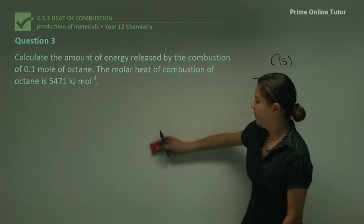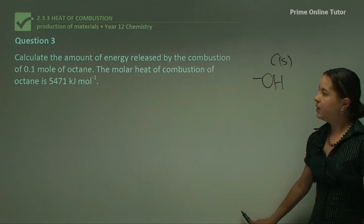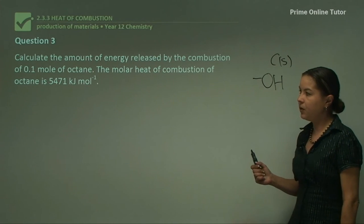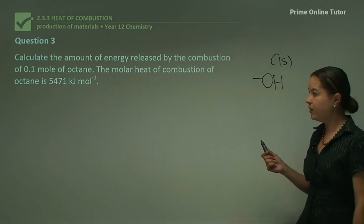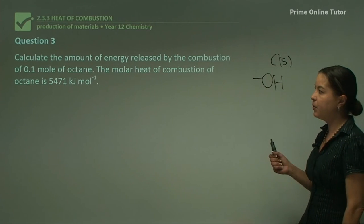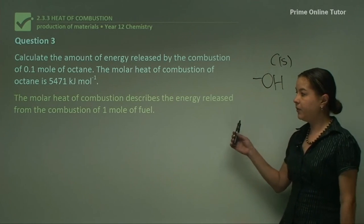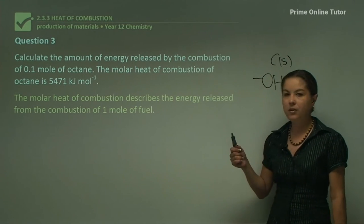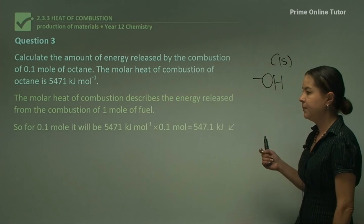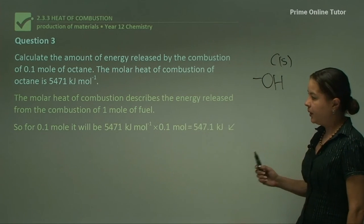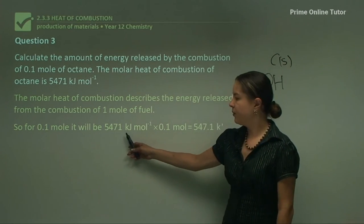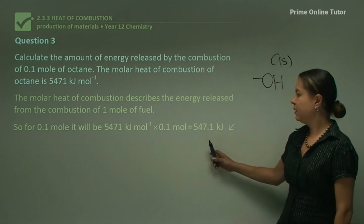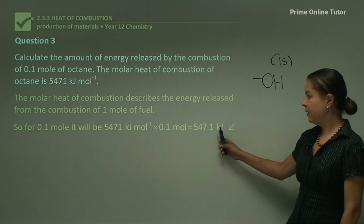Question three: calculate the amount of energy released by the combustion of 0.1 mole of octane, given that the molar heat of combustion of octane is 5,471 kJ/mol. The molar heat of combustion describes energy released from one mole of fuel, so for 0.1 mole it is 5,471 kJ/mol × 0.1 mol = 547.1 kJ.